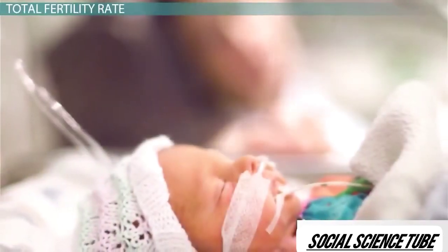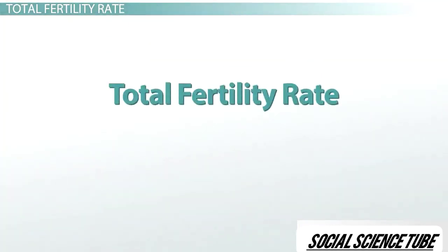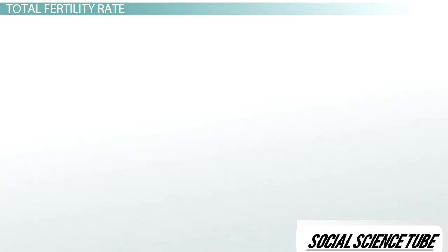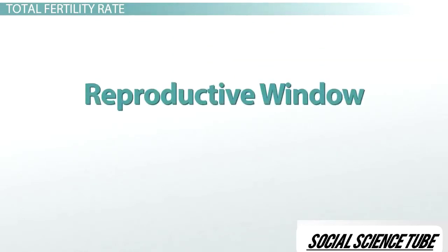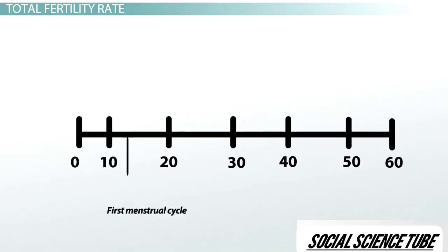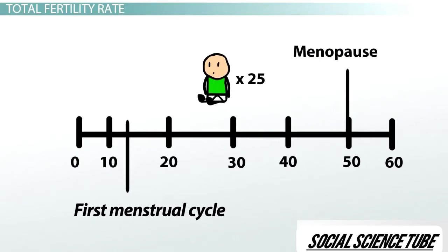One of the most important population characteristics of a country has to do with births. The total fertility rate is the average number of offspring born to a woman in a population during her reproductive window. The reproductive window is the period in a woman's life when she can physically become pregnant, starting with sexual maturity and ending with menopause. In a world with unlimited resources and no problems, a woman could produce up to 25 offspring during her reproductive window.